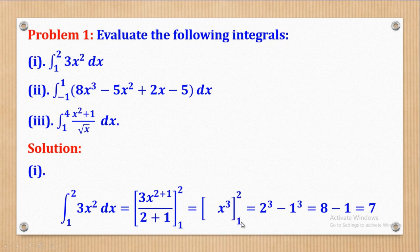Now to remove the box brackets, substitute for x: first put the upper limit 2 to get 2 cubed, minus the lower limit 1 to get 1 cubed. Now 2 cubed is equal to 8 and 1 cubed is equal to 1. So 8 minus 1 gives 7, and that will be the answer to Roman 1.